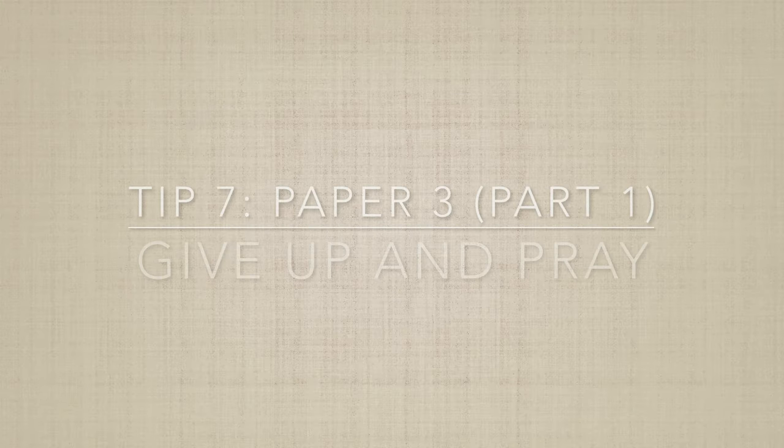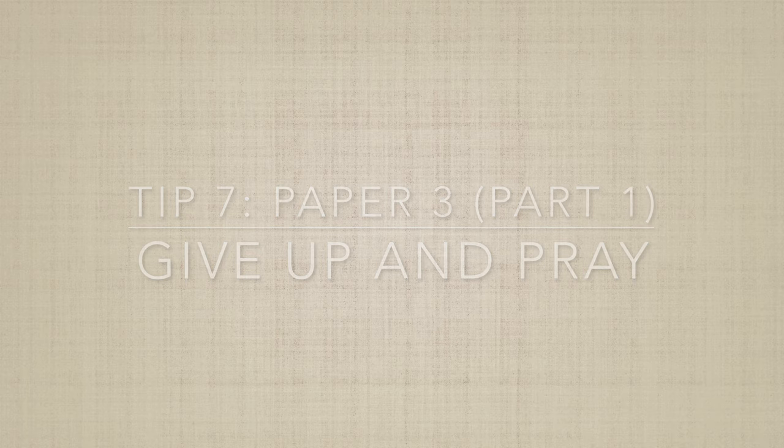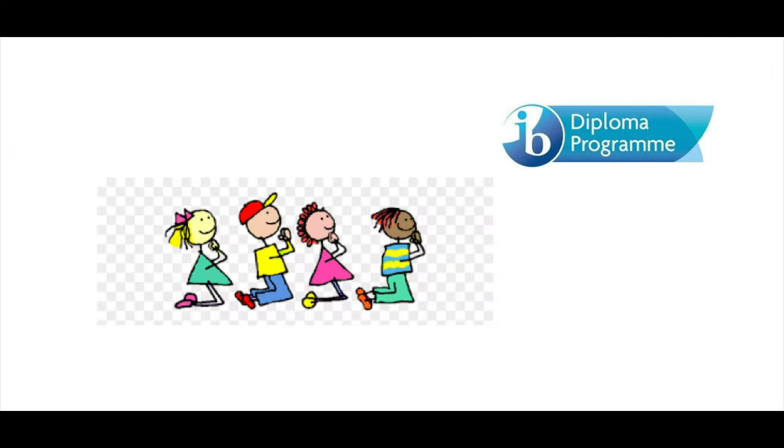Paper 3 is divided into two parts — it has the option, but it also has Section 1. This leads me to my final seventh tip regarding Section 1 of Paper 3: just give up and pray. This section is honestly the hardest to study for and they can basically throw anything at you.